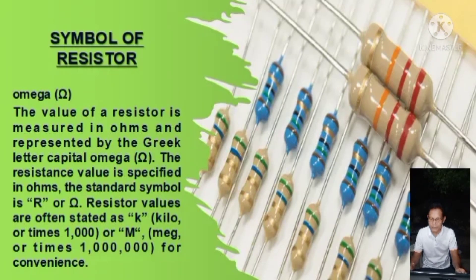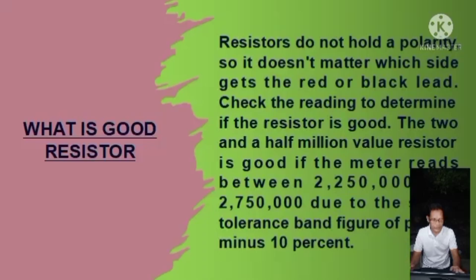Resistor values are often stated as K (Kilo, or x1,000) or M (Mega, or x1,000,000).